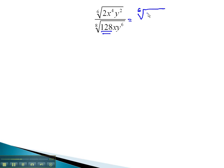We have the 6th root of 2, x to the 4th, y squared, over the 8th root of 128, which is 2 to the 7th, x, y to the 6th. Now, let's get that common index of 24.